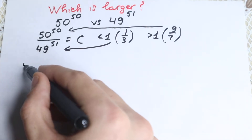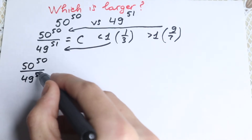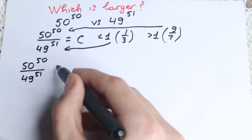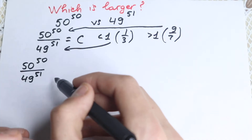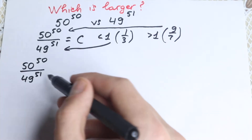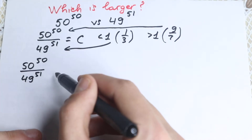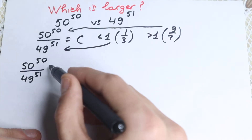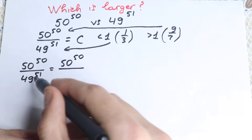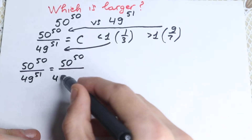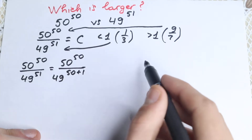Right now let's look at this expression. We have 50 to the power of 50 divided by 49 to the power of 51. Both have different bases — 50 and 49 — we cannot create the same base; one is even, one is odd. But if you look at the powers: 50 and 51 are really close. So we can write the denominator as 49 to the power of 50 plus 1, writing the exponent as a sum, which will be really useful.